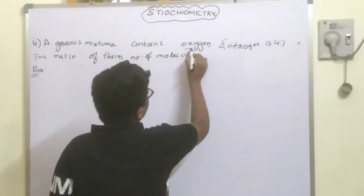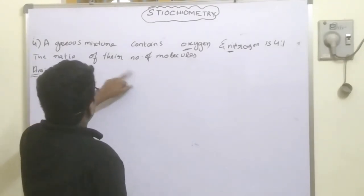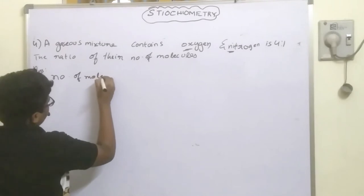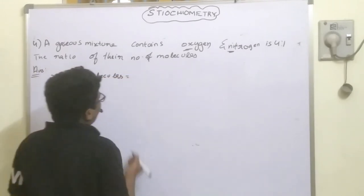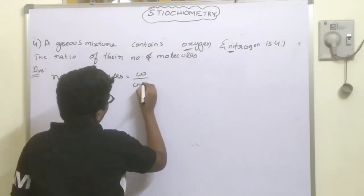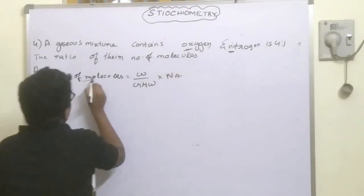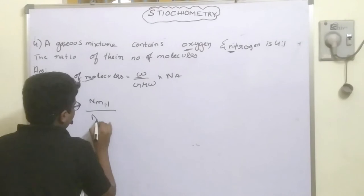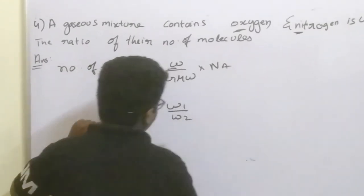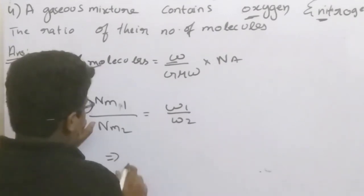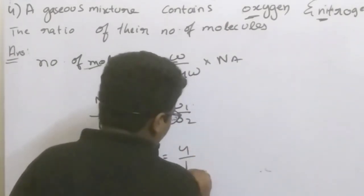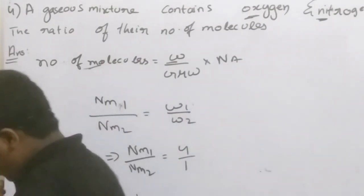Fourth numerical: a mixture of gases oxygen and nitrogen has a mass ratio of 4 to 1. The ratio of the number of molecules: number of molecules equals weight divided by gram molecular weight times Avogadro number, so Nm1 by Nm2 equals W1 by M1 divided by W2 by M2. Substituting the ratio 4 is to 1 for the weights gives the answer.